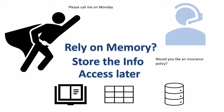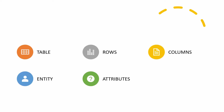We store such information in an object called a table. Whenever we talk about tables, we are going to hear words like rows, columns, entities, attributes, and tuples. Let's understand and create our first table by going back to the previous example.